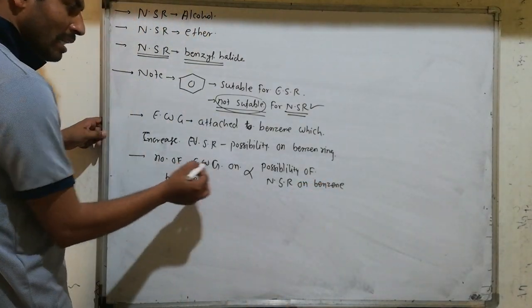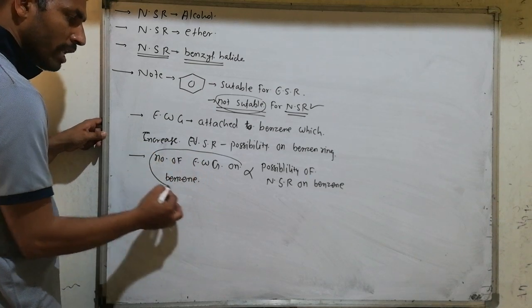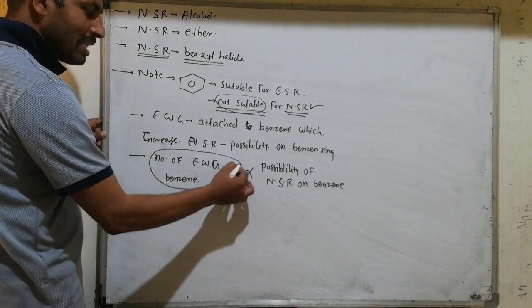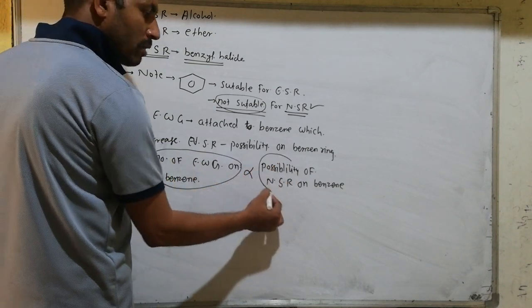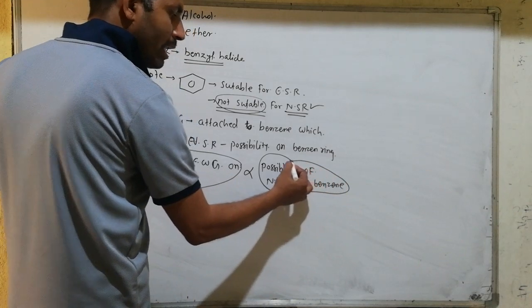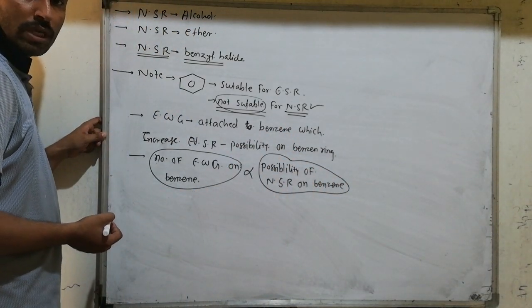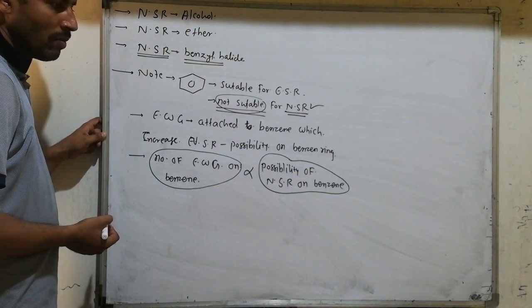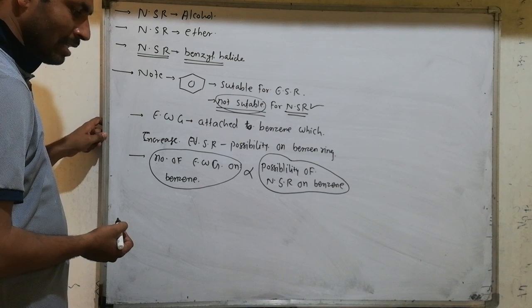When the number of electron withdrawing groups on a benzene ring increases, then the possibility of nucleophilic substitution reaction will also increase.